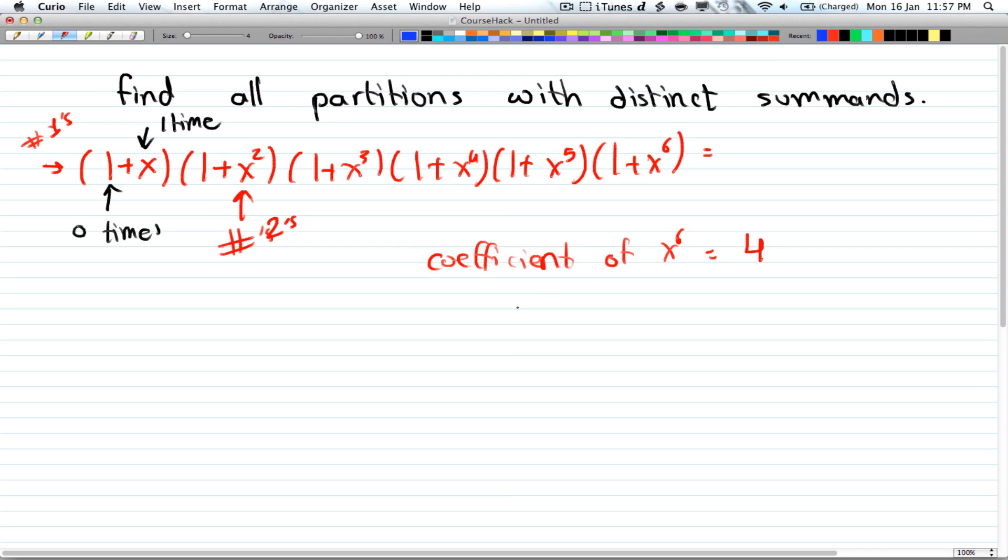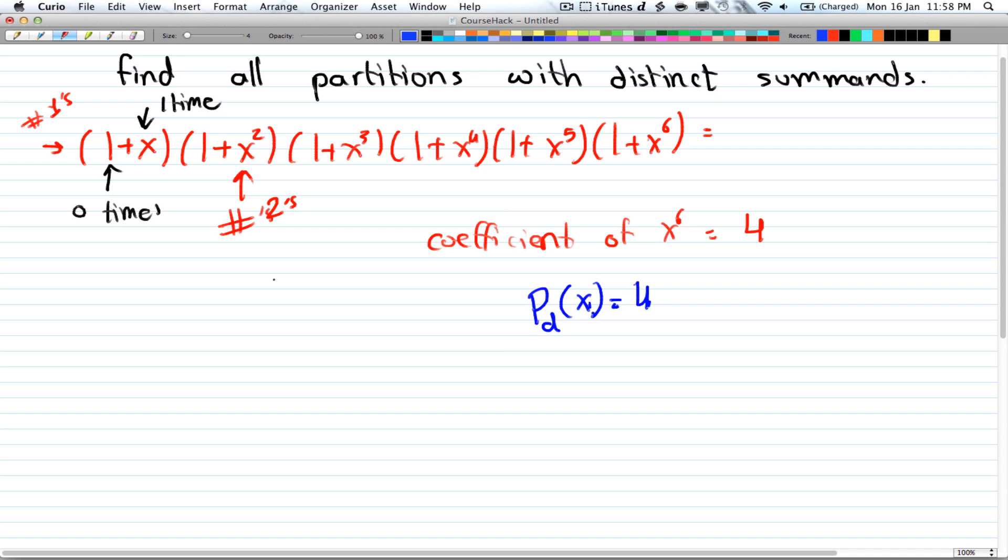Alright, and usually you want to represent this as p. So p is just the name of the function, and then a small d for distinct. So pd of x is equal to 4. If you're looking for only odd summands, then it's going to be p o of x. If it's even, then p e of x, and so on.